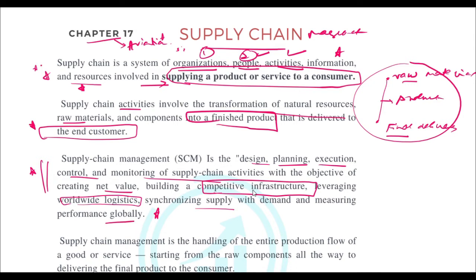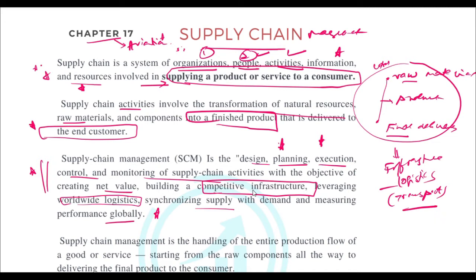First you need to plan, then execute, and maintain control over the entire process. For that, you need a good infrastructure in place. Logistics is key — it is all about transportation, moving material from one place to another. You also need to synchronize supplies so that all components are in sync with each other.